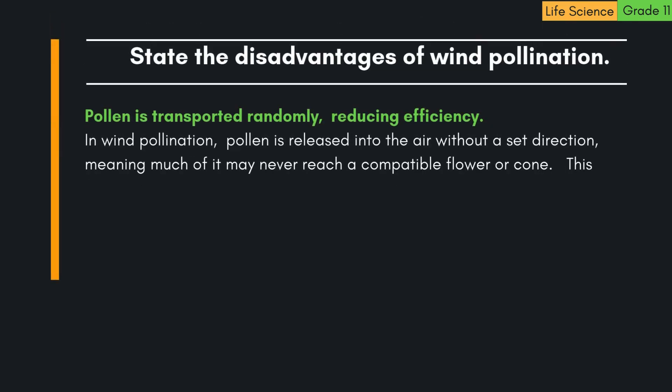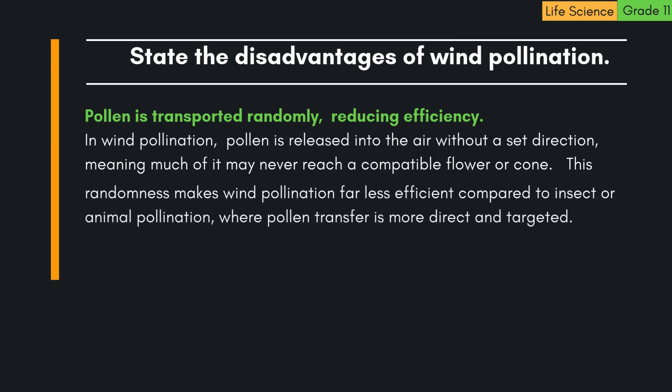3. Pollen is transported randomly, reducing efficiency. In wind pollination, pollen is released into the air without a set direction, meaning much of it may never reach a compatible flower or cone. This randomness makes wind pollination far less efficient compared to insect or animal pollination, where pollen transfer is more direct and targeted.